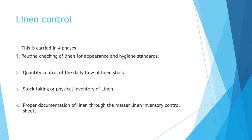Linen control is carried out in four phases. The first is routine checking of linen for appearance and hygiene standards. As linen is issued to staff, we should ensure the shine and quality of the fabric is maintained even after repeated washes. During the laundering process, harsh chemicals should not be used, as they spoil the shine of the fabric.